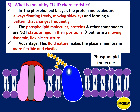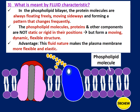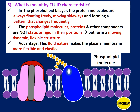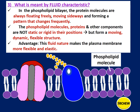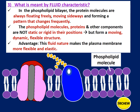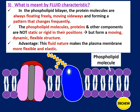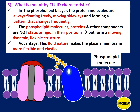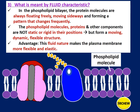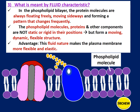The phospholipid molecules, proteins, and other components are not static at all — they are not rigid or fixed in their positions, but they are always moving to form a dynamic, flexible structure. The advantage of this fluid nature is that it makes the plasma membrane more flexible. For example, in the red blood cell, the plasma membrane is very flexible and the red blood cell can squeeze into the narrow capillaries. You can see the molecules moving left and right to depict the fluid nature of the plasma membrane.